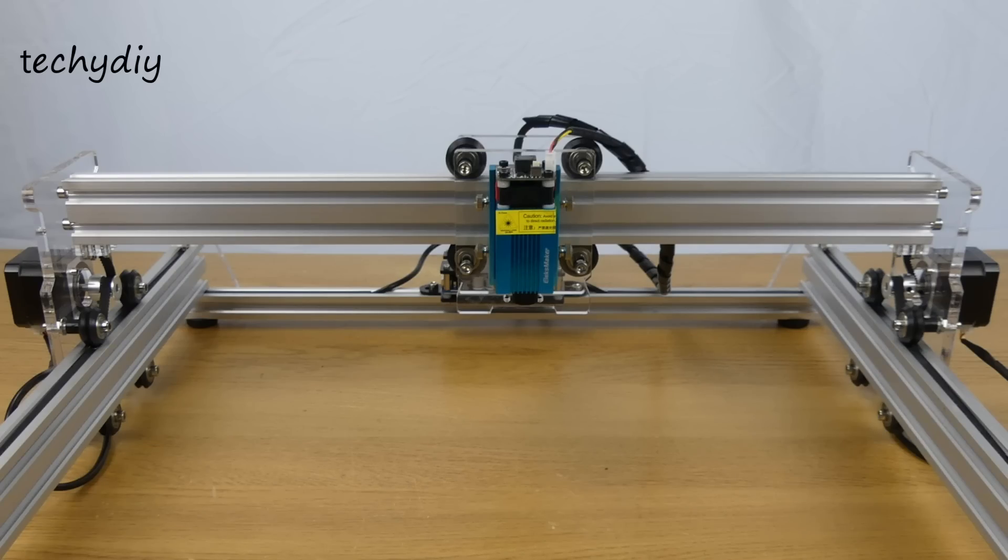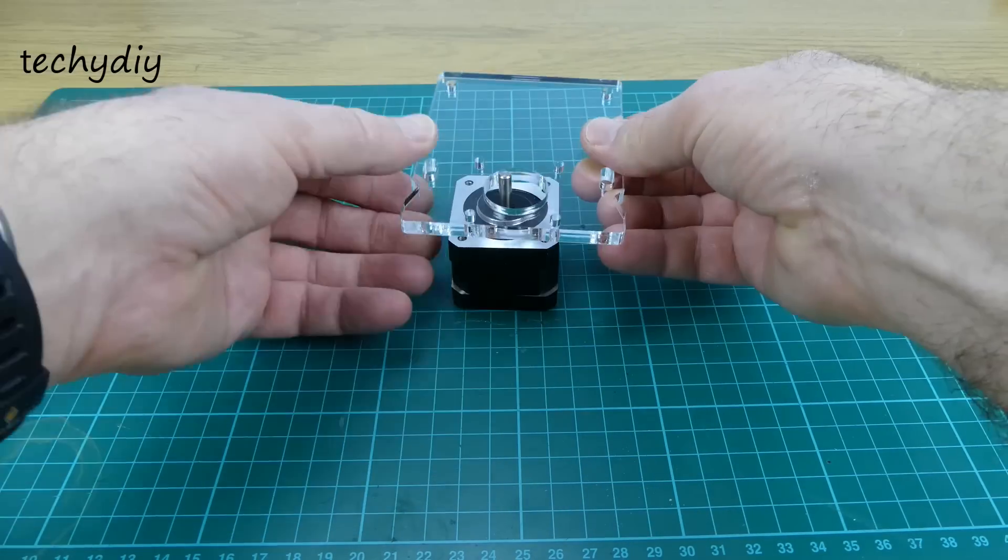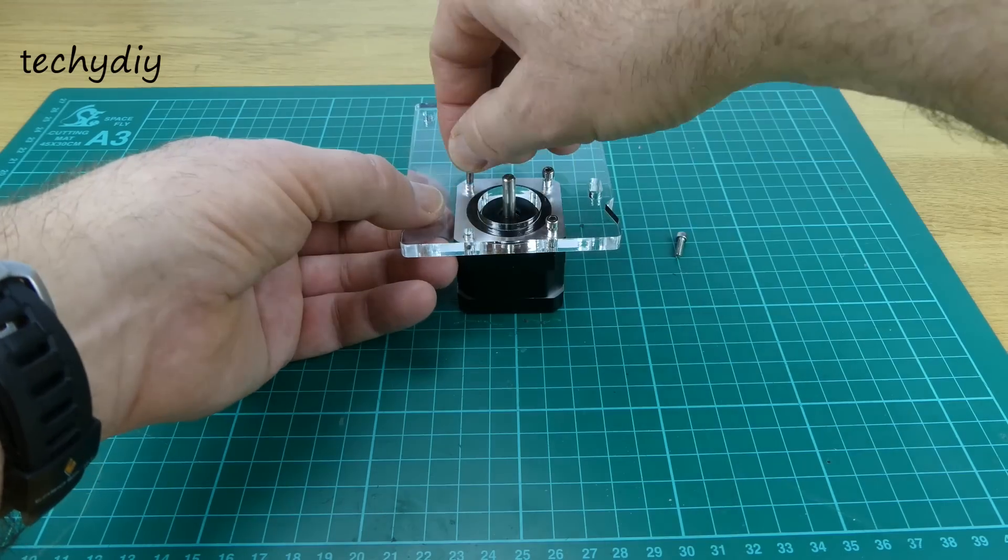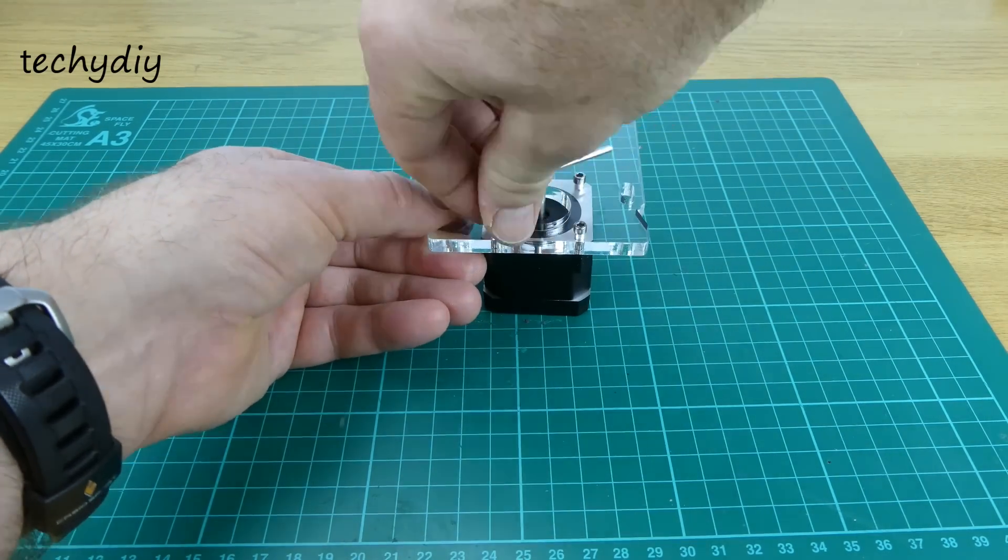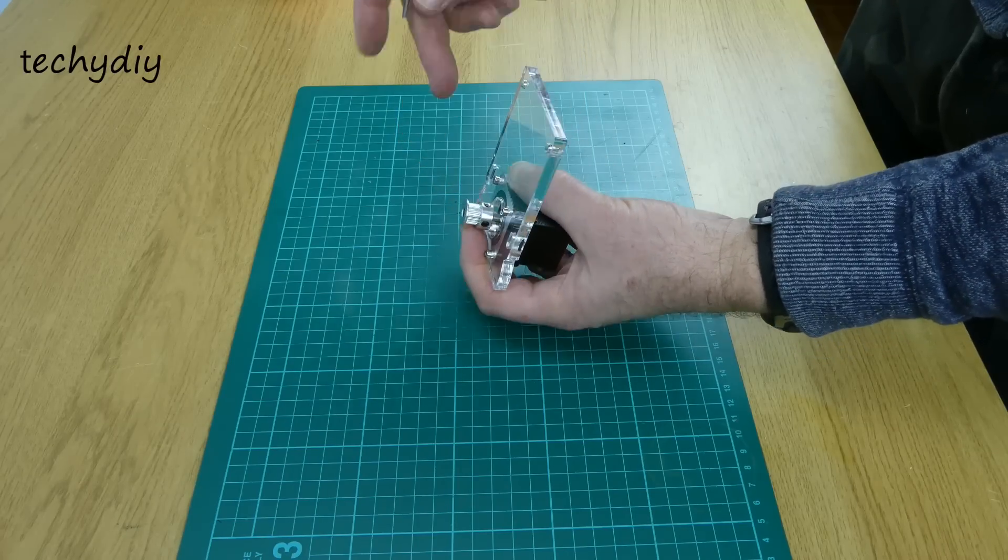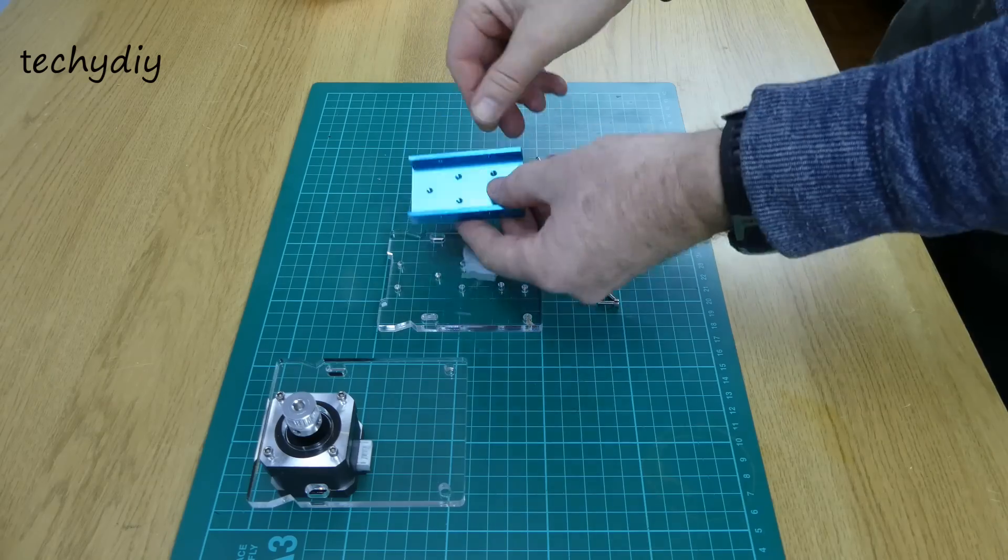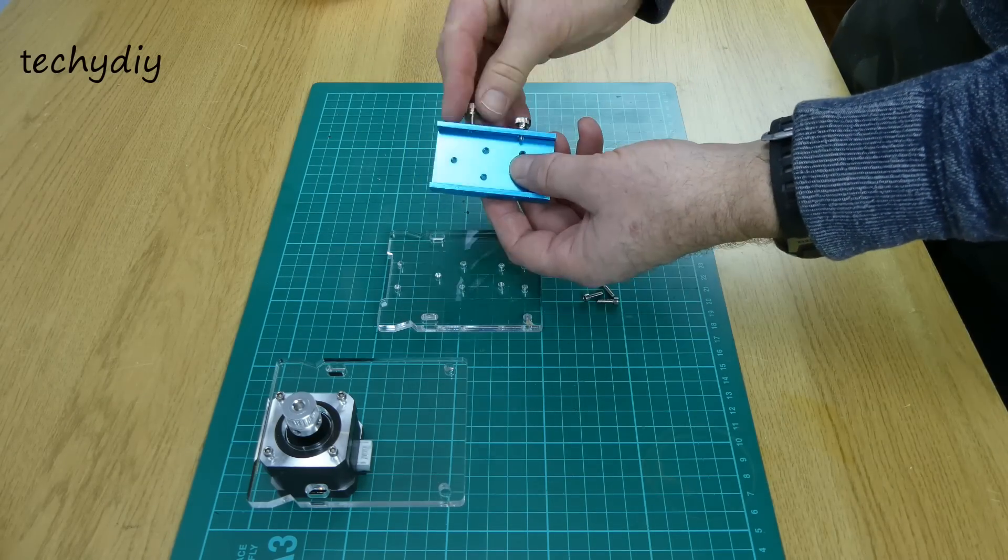Next I built the gantry that forms the X axis. The third stepper motor was bolted onto an acrylic mounting plate. Then the pulley was fitted onto the drive shaft. The retaining screws for the laser were fitted into the laser mounting plate.